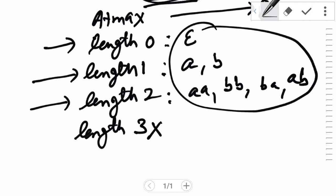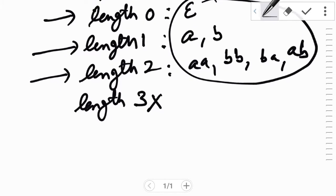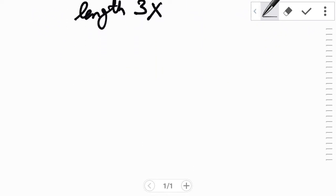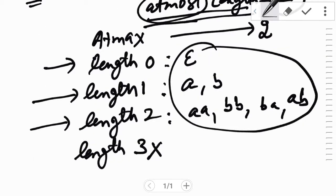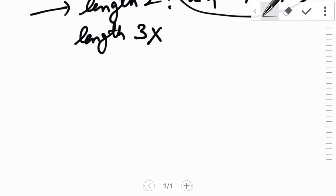So let us try to design a DFA for the situation. Now the first string was epsilon, so fulfilling the condition, epsilon has to be accepted. Whenever epsilon has to be accepted by a DFA, the initial state should be the final state.